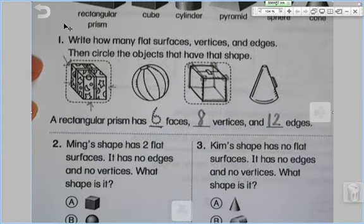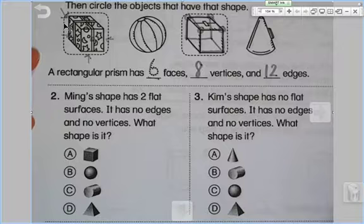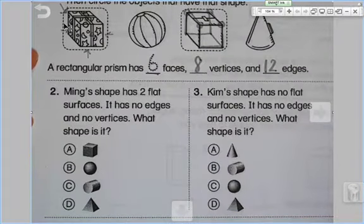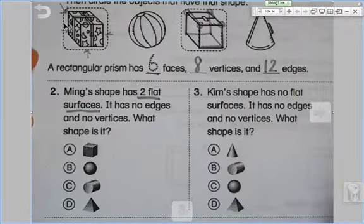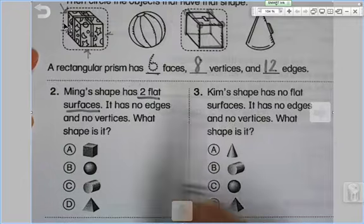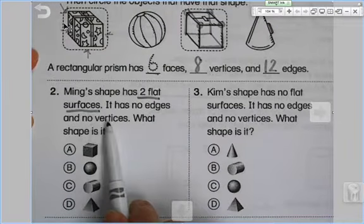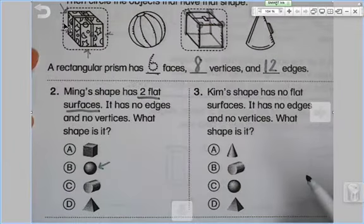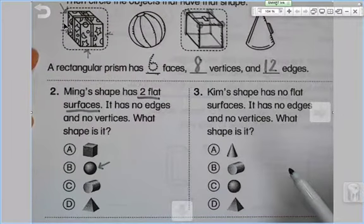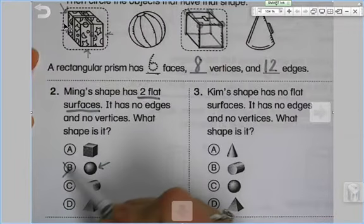Let's take a look at number two, everybody. Ming's shape has two flat surfaces. I'm going to underline two flat surfaces because that's important information. It has no edges and no vertices. So no straight lines and no corners. What shape is it? Well, I look here. This has no edges and no vertices, but this sphere also does not have two flat surfaces. So it cannot be a sphere.